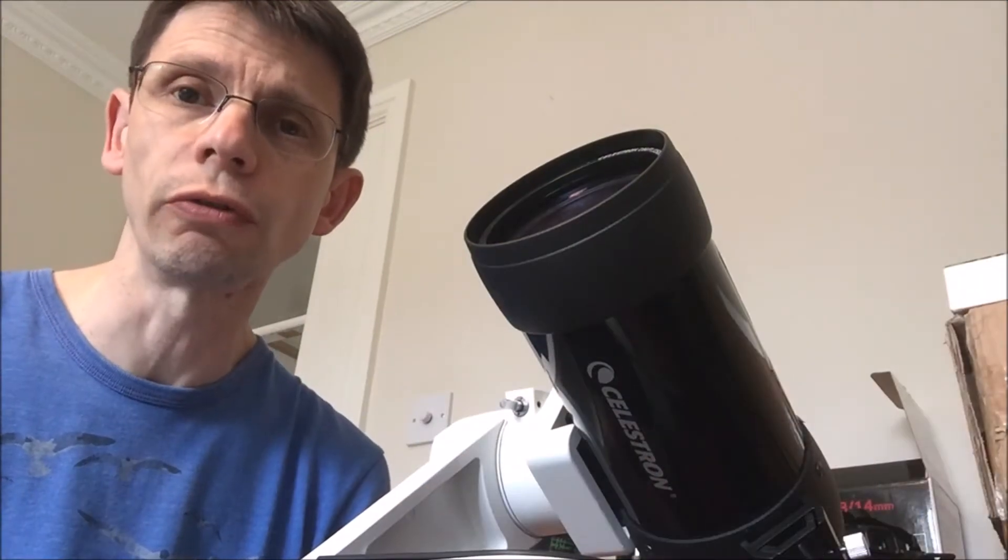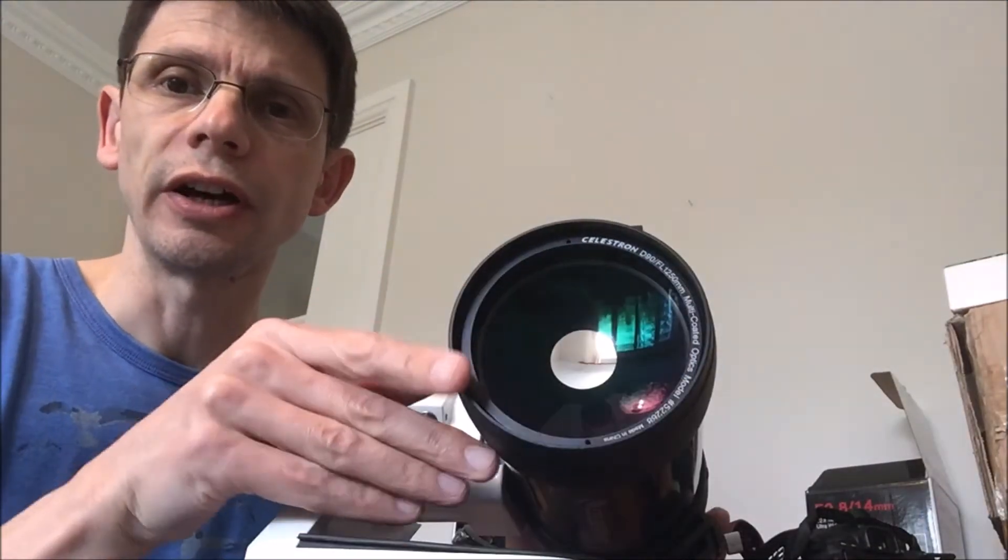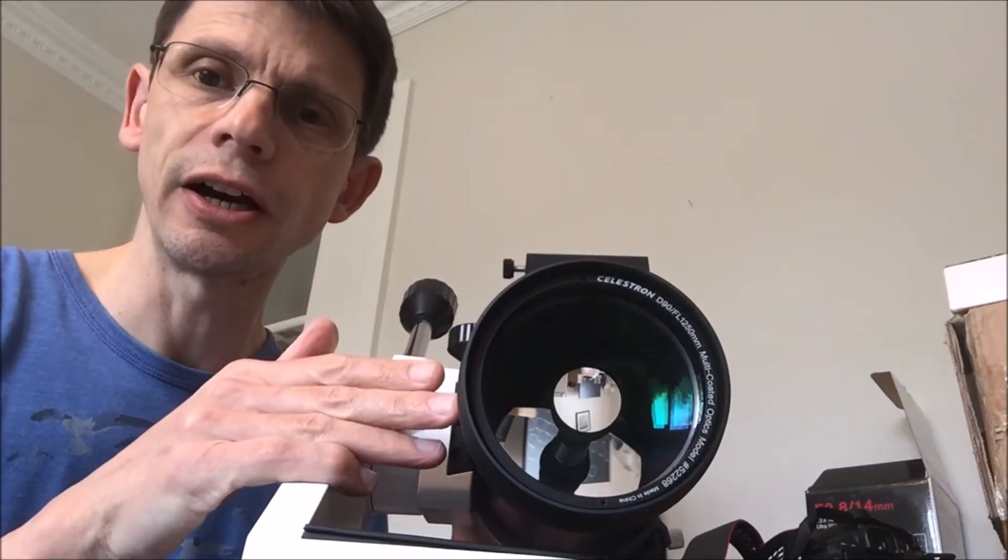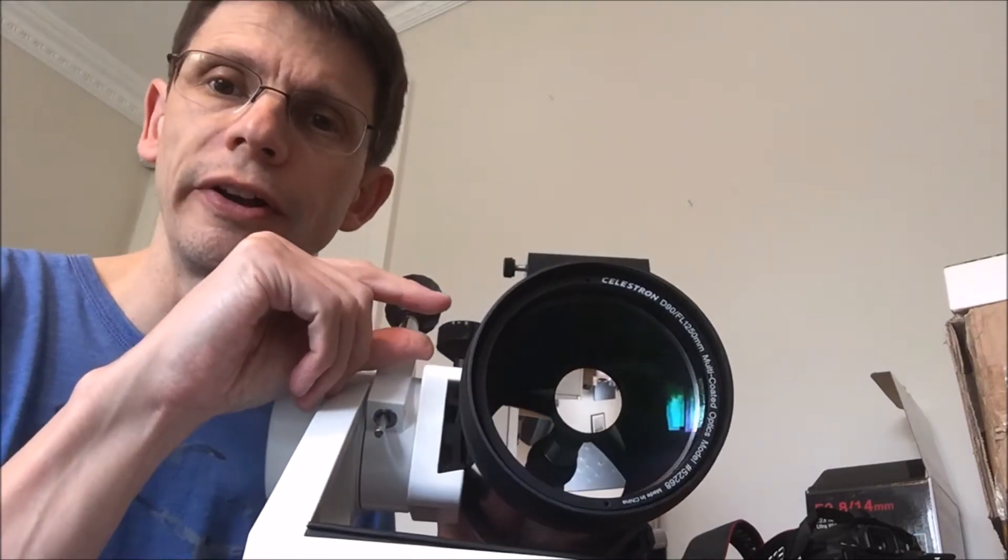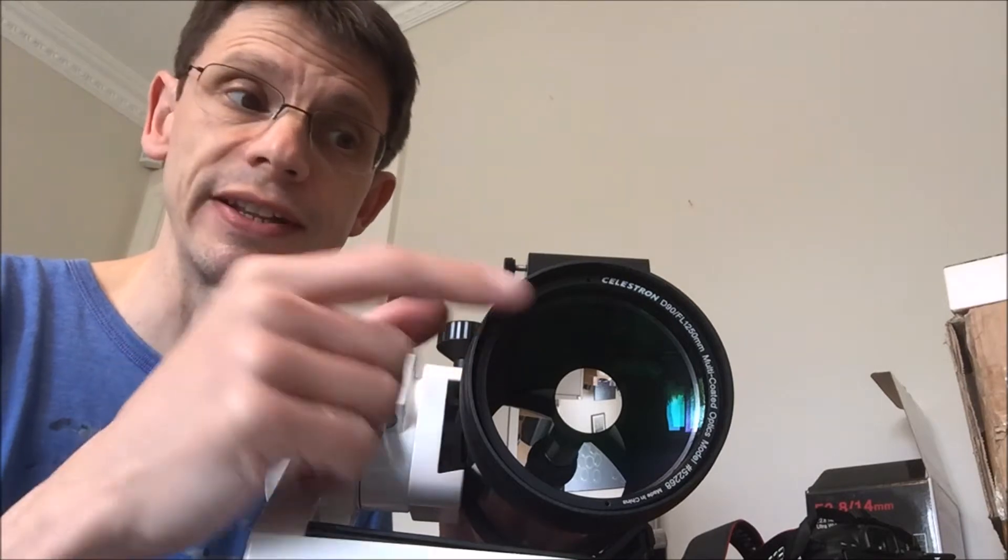So what problem are we trying to solve? Well, if we look down the front of the telescope towards the primary mirror, hopefully you can see pointing out from the back of the primary mirror, there is a tube and that tube points towards the secondary.